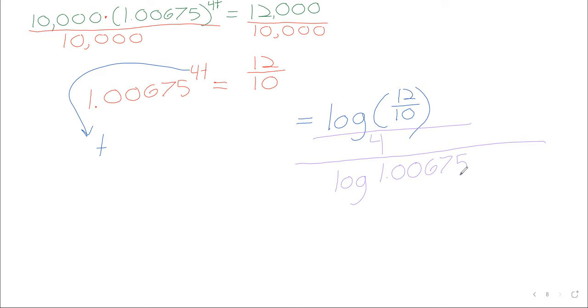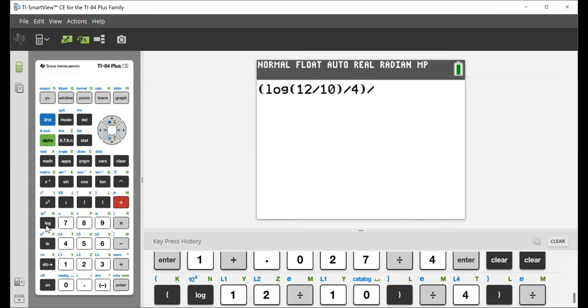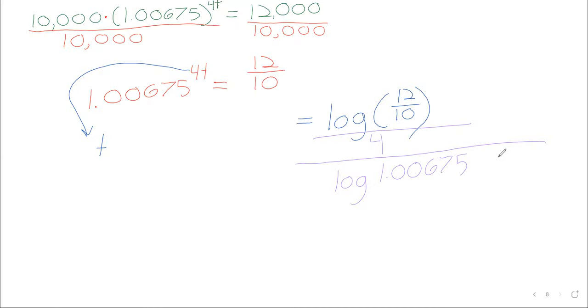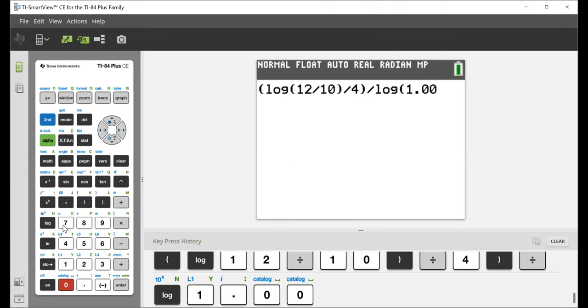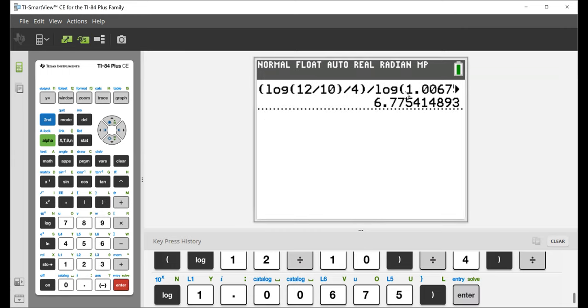And that will get t by itself. It doesn't, in a practical way, really matter, because we're going to be putting this into our calculator, so it's a few more button presses, maybe. The log of 12 tenths divided by 4, or divided by the log of 1.00675. Six point seven seven years.